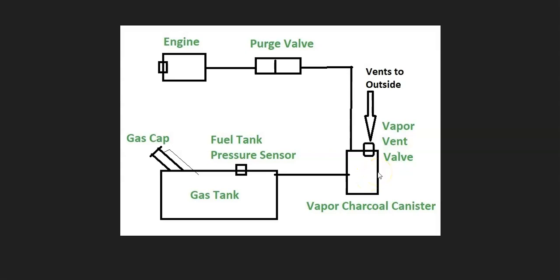There can be different components on the charcoal canister. One of the main ones is the vent valve, which opens or shuts when the computer tells it to — it'll close at certain times to test the system. A hose then leaves the charcoal canister and goes up to the top of the engine to what's called a purge valve, which opens when the engine is running so gas vapors get burnt off, and closes when the engine is off so vapors don't escape.